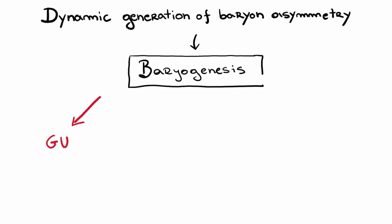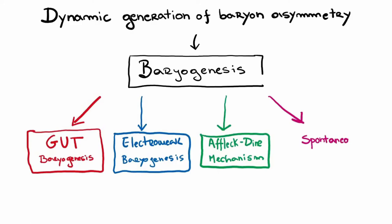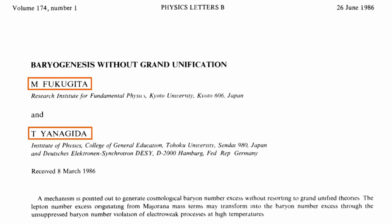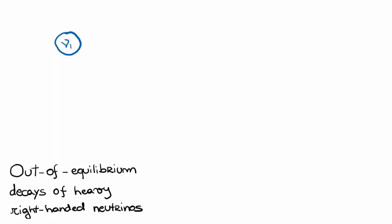Several new mechanisms of bariogenesis have been put forth, but a particularly interesting class of scenarios is the so-called leptogenesis, first proposed by Fukugita and Yanagida in 1986. This suggests a model in which out-of-equilibrium decays of heavy Majorana neutrinos generate a lepton asymmetry.